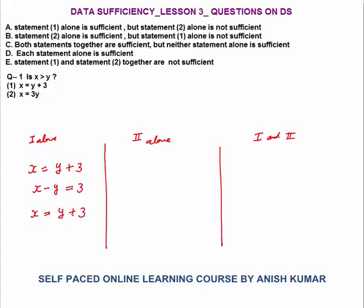For example, x equals y plus 3. If y is 1, then x equals 4. Both positive numbers — is x greater than y? 4 is greater than 1, yes. Now take negative: x equals minus 8. Then y should be minus 11, because minus 11 plus 3 equals minus 8. Is minus 8 greater than minus 11? Yes. So in both cases, whether positive or negative, x is greater than y.